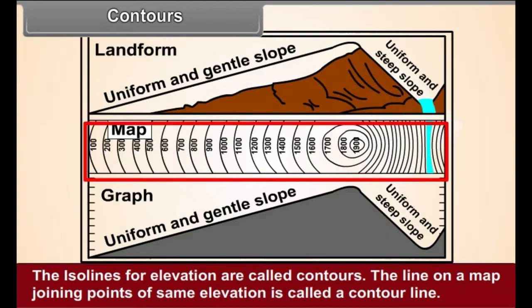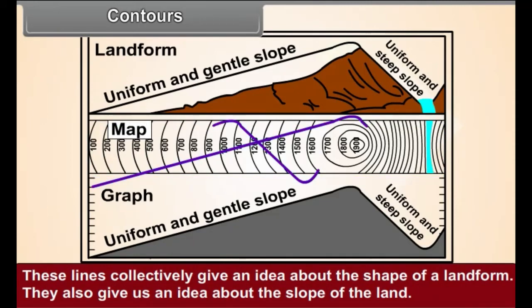Contours. The isolines for elevation are called contours. The line on a map joining points of same elevation is called a contour line. These lines collectively give an idea about the shape of a landform. They also give us an idea about the slope of the land.